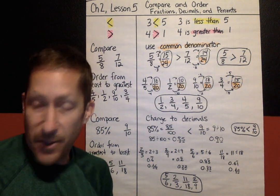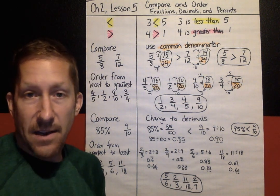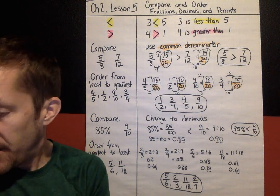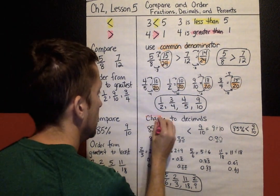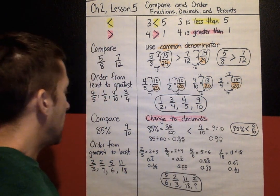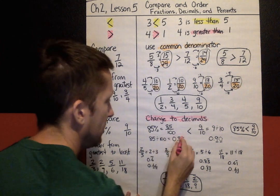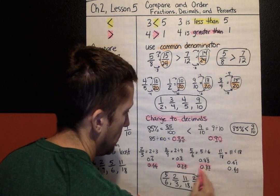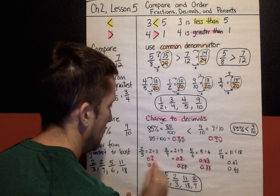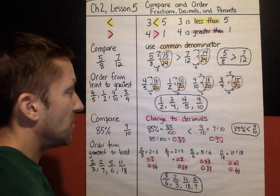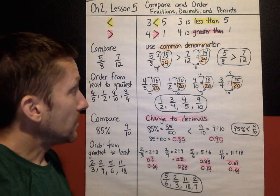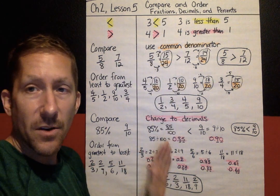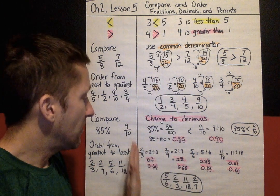On today's practice, you may choose either strategy — common denominator strategy or change-to-decimal strategy. Just remember that whichever strategy you're using, you do have to go back and compare the original things that we're comparing.